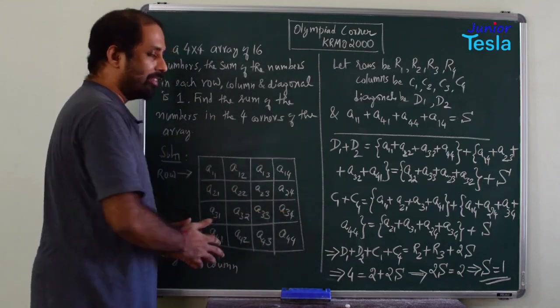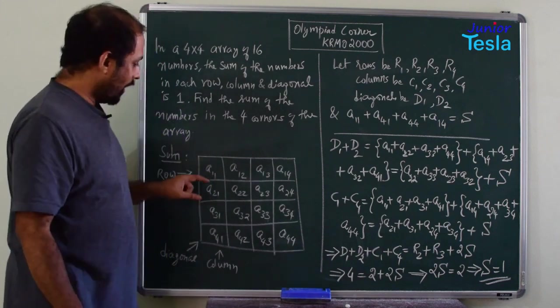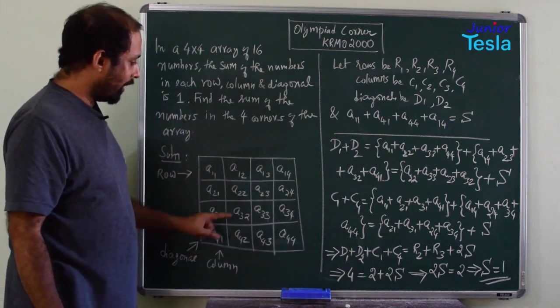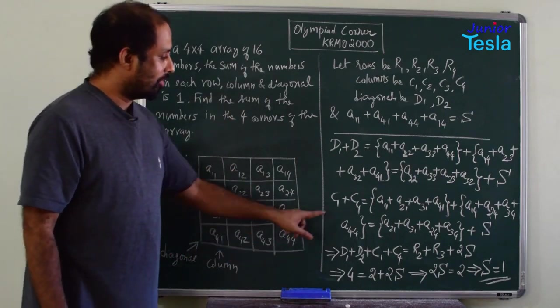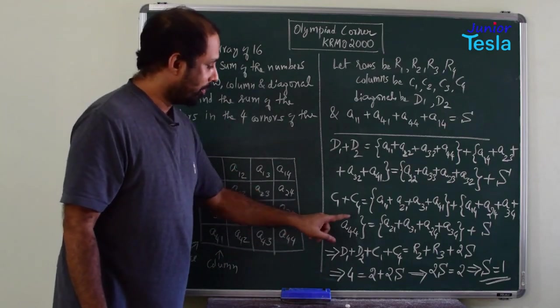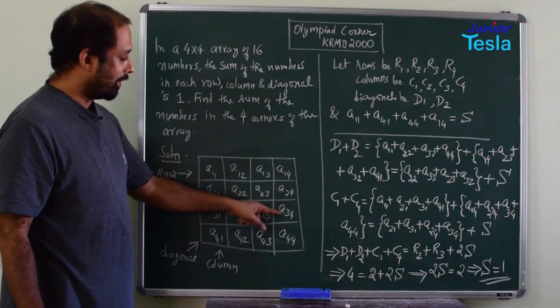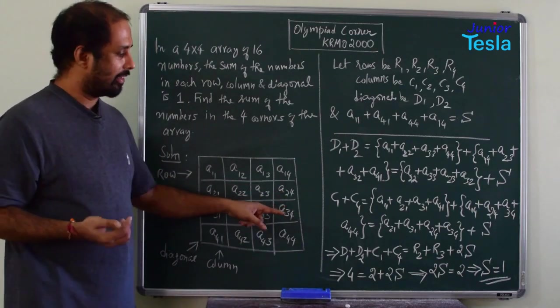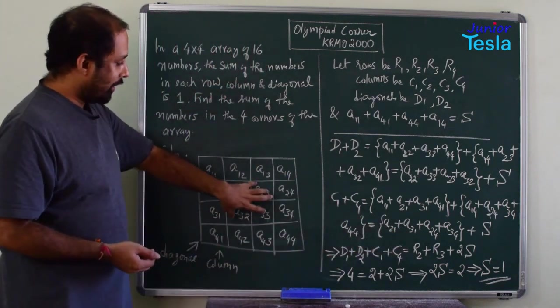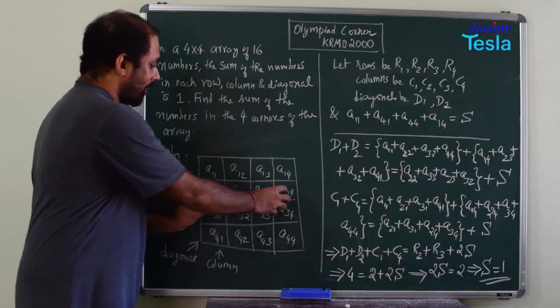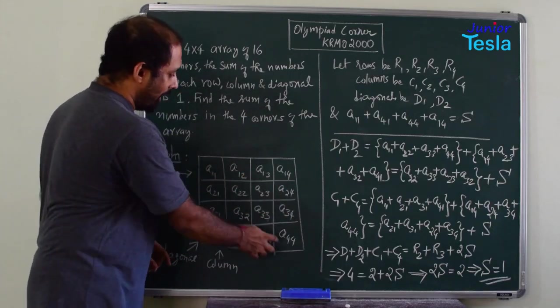If I have taken these two columns, again I will get these four corner entries. I have included these four entries also along with the remaining four entries. So c1 plus c4 is equal to a21 plus a31 plus a24 plus a34 plus capital S. We got these four entries and we got these four entries and then we have written these four entries twice.